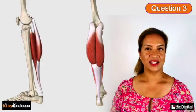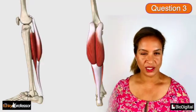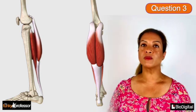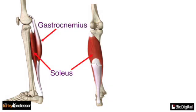The Achilles tendon is found on the back of the ankle joint and it is formed by the fusion of the gastrocnemius and the soleus.